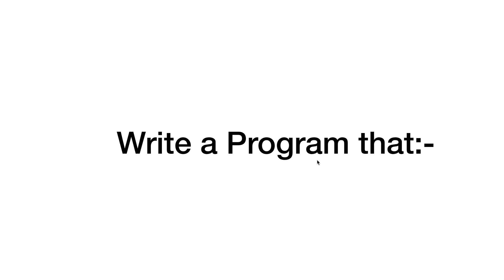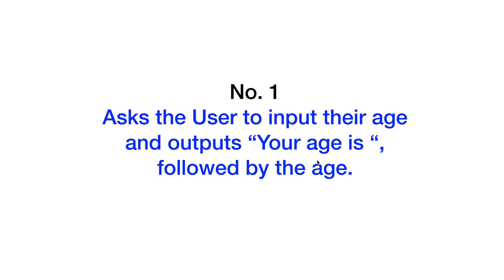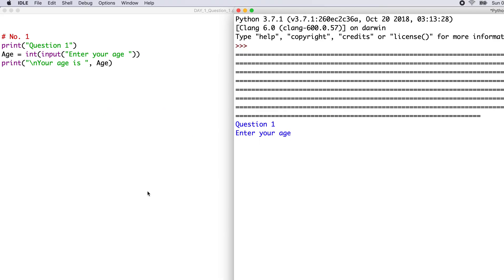Now we are going to write a program that, for number 1, asks the user to input their age and outputs 'your age is' followed by the age. Here we have the program or the code for question 1. Line 1 reads hashtag number 1 — this is just a comment statement.